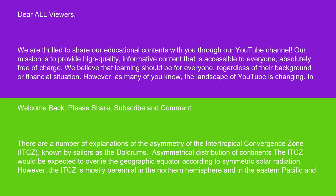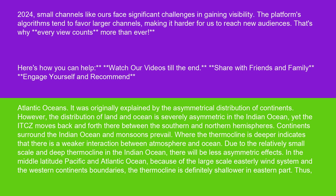Asymmetrical distribution of continents: the ITCZ would be expected to overlie the geographic equator according to symmetric solar radiation. However, the ITCZ is mostly perennial in the northern hemisphere and in the eastern Pacific and Atlantic oceans. It was originally explained by the asymmetrical distribution of continents.